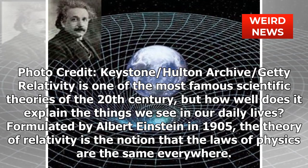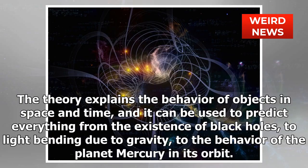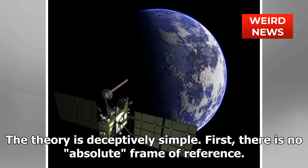Relativity is one of the most famous scientific theories of the 20th century, but how well does it explain the things we see in our daily lives? Formulated by Albert Einstein in 1905, the theory of relativity is the notion that the laws of physics are the same everywhere. The theory explains the behavior of objects in space and time and can be used to predict everything from the existence of black holes to light bending due to gravity to the behavior of the planet Mercury in its orbit.